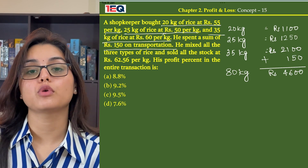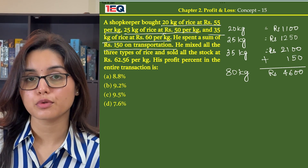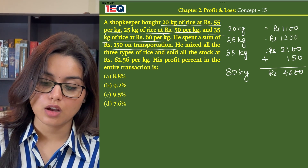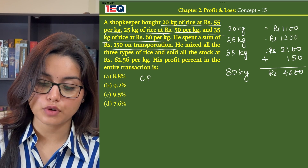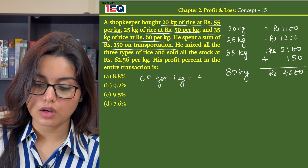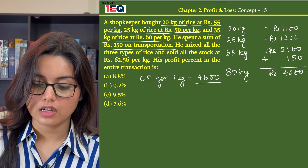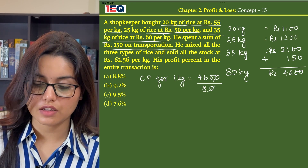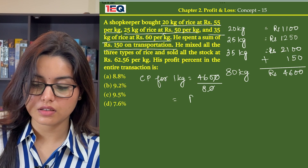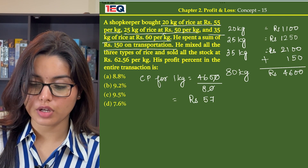Now if he bought 80 kg of rice for Rs 4600, the cost price for 1 kg will be Rs 4600 divided by 80, which gives us Rs 57.50.